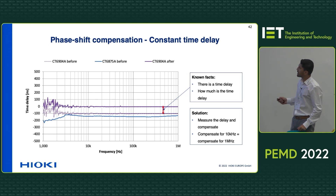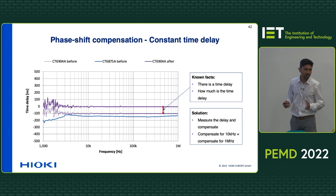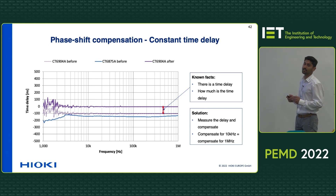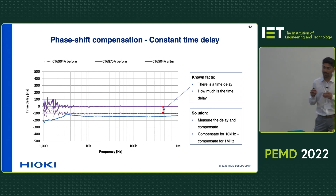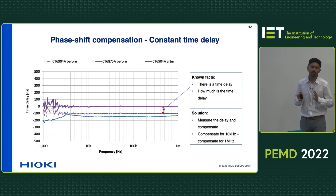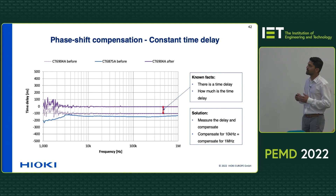If you do the same compensation in a current sensor where the delay is constant, it's not a problem. You can compensate the delay at 10 kilohertz, 20 kilohertz, 100 kilohertz, or one megahertz — it doesn't matter. By compensating at one frequency, you are effectively compensating for the delay across the entire frequency spectrum. At lower frequencies where the cycling time is in the range of milliseconds, an additional error of nanoseconds is not going to make a big difference in the power measurement.